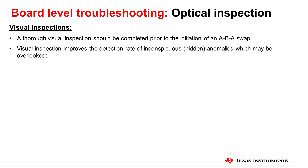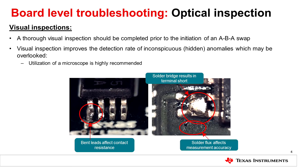The optical inspection helps improve the detection of hidden anomalies which may go overlooked and help you save time troubleshooting. In this example, we show two figures of common issues which can be found from a simple optical inspection. These are bent leads, solder bridges, and very importantly, the detection of excess solder flux.